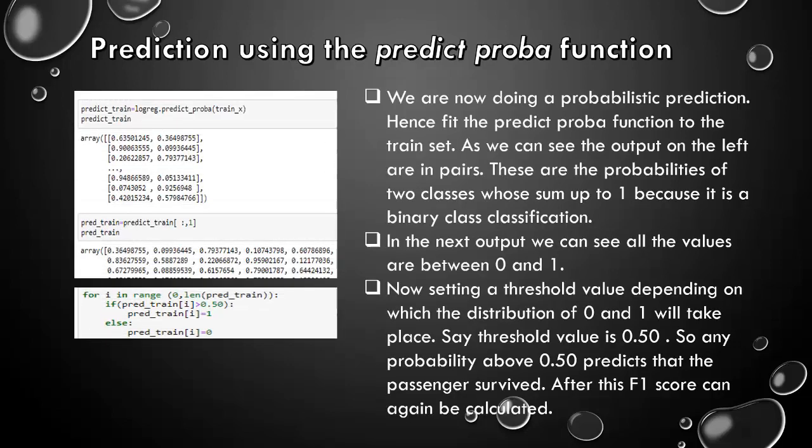Now, doing the prediction using the PredictProba function. We are now doing a probabilistic prediction. Hence, feed the PredictProba function to the test set as we can see the output on the left side are all in pairs. These are the probabilities of two classes which sum up to 1 because it is a binary class classification. In the next output, we can see all the values are between 0 and 1. Now, setting a threshold value, depending on which the distribution of 0 and 1 will take place. Say, the threshold value is 0.50. So, any probability above 0.50 predicts that the passenger survived and below it predicts that the passenger didn't survive. After this, F1 score can again be calculated.